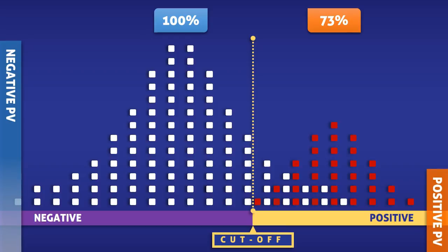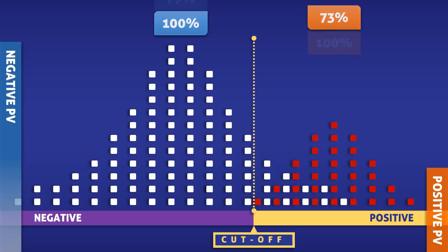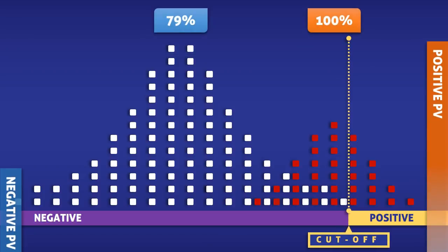If instead we shift the threshold for a positive test to the right, we can obtain a 100% positive predictive value. So with this test, the condition will definitely be present if a person has a positive test. The negative predictive value, however, has dropped to 79%, meaning that for every 100 people who test negative, 21 will actually have the condition. So although the test is accurately identifying the condition in people who test positive, it is incorrectly excluding the condition in people who test negative.